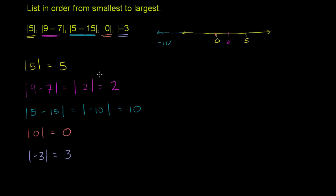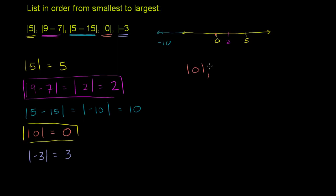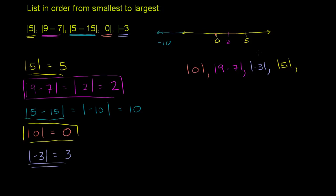Now that we've expressed them all as simple integers, let's list them in order from smallest to largest. The smallest is the absolute value of 0. The next smallest is 2, which came from the absolute value of 9 minus 7. Then the next smallest is 3, from the absolute value of negative 3. Then we have 5, which was just the absolute value of 5. And finally we have 10, which was the absolute value of 5 minus 15. And we are done.